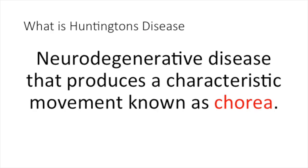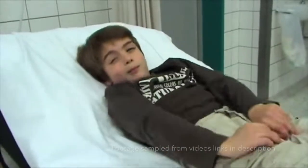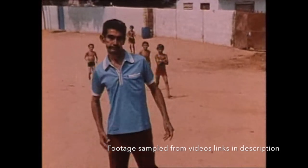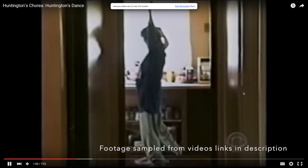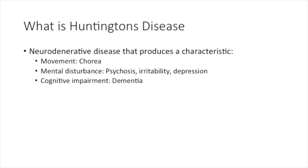What is Huntington's? Huntington's is a neurodegenerative disease that produces a characteristic movement known as chorea. Chorea is when the body produces unpurposeful movement. Some textbooks refer to them as a dance-like movement, and if you add some twisting motions into it, they can be called choreoathetosis. In addition to chorea, patients with Huntington's can also develop problems with their mood and also their cognition. As the disease progresses, patients can also develop dementia and psychosis.